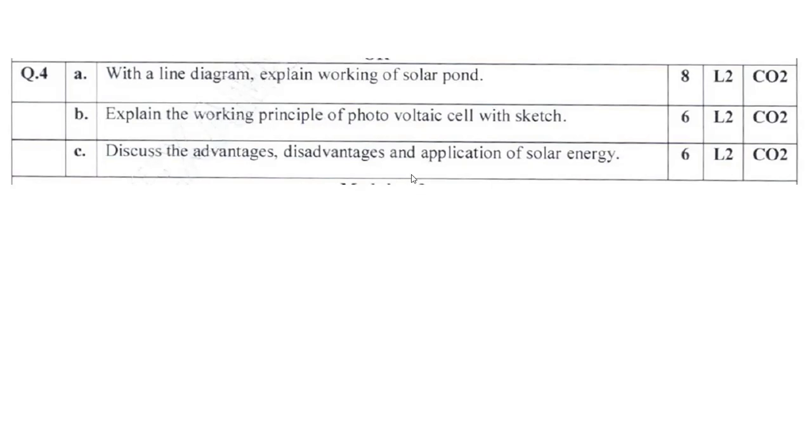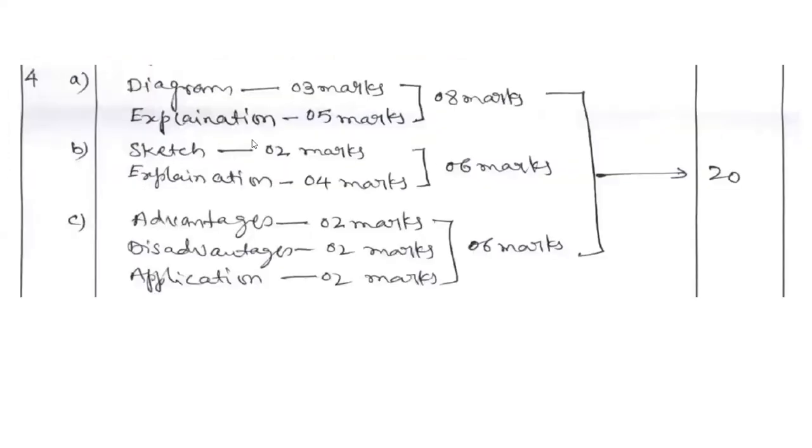Discuss advantages, disadvantages, and applications of solar energy. Advantages: available plenty, modularity, available anywhere, cost effective, easy return on investment. Drawbacks: intermittence, depends on weather, cost per unit is very high. Applications: solar thermal like solar water heater, and photovoltaic applications like standalone or grid connected.